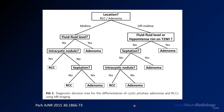There's a chart from an AJNR paper from 2015 — cited on screen — that helps you decide if something is a Rathke's cleft cyst or an adenoma. In this case, for instance, the lesion is midline but there is a fluid-fluid level, which would make it most likely an adenoma. This is a useful decision tree, and I'll put a link to that in the description.